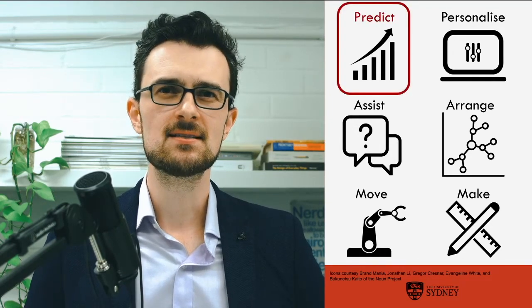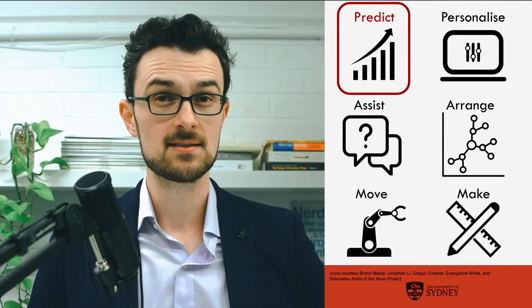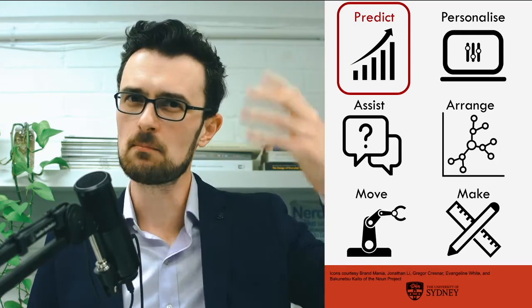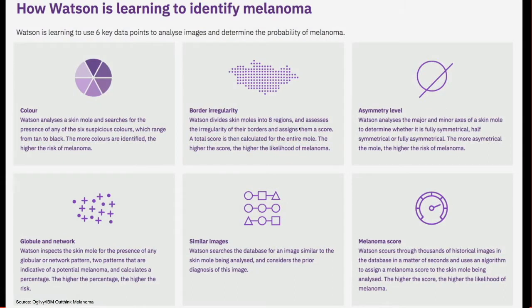A prediction system simply puts different stimuli into categories or answers something about them. So given this, is it this one or this one? Or given this thing, is it a high number or a low number? IBM Watson was trained on a whole bunch of images of moles, some of which were cancerous, some of which were melanomas, and was able to tell with better accuracy than the average dermatologist whether a mole was cancerous — by looking at the shape, the color, the asymmetry. It was able to beat a dermatologist after being trained on millions and millions of labeled images.